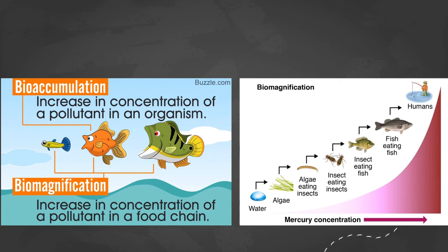Bioaccumulation refers to how a pollutant accumulates within a single organism — an increase in concentration of a pollutant in one organism. Biomagnification refers to how that pollutant's concentration magnifies within a food chain. For example, mercury concentration increases as you move up the food chain from algae to algae-eating insects all the way up to humans, demonstrating biomagnification.